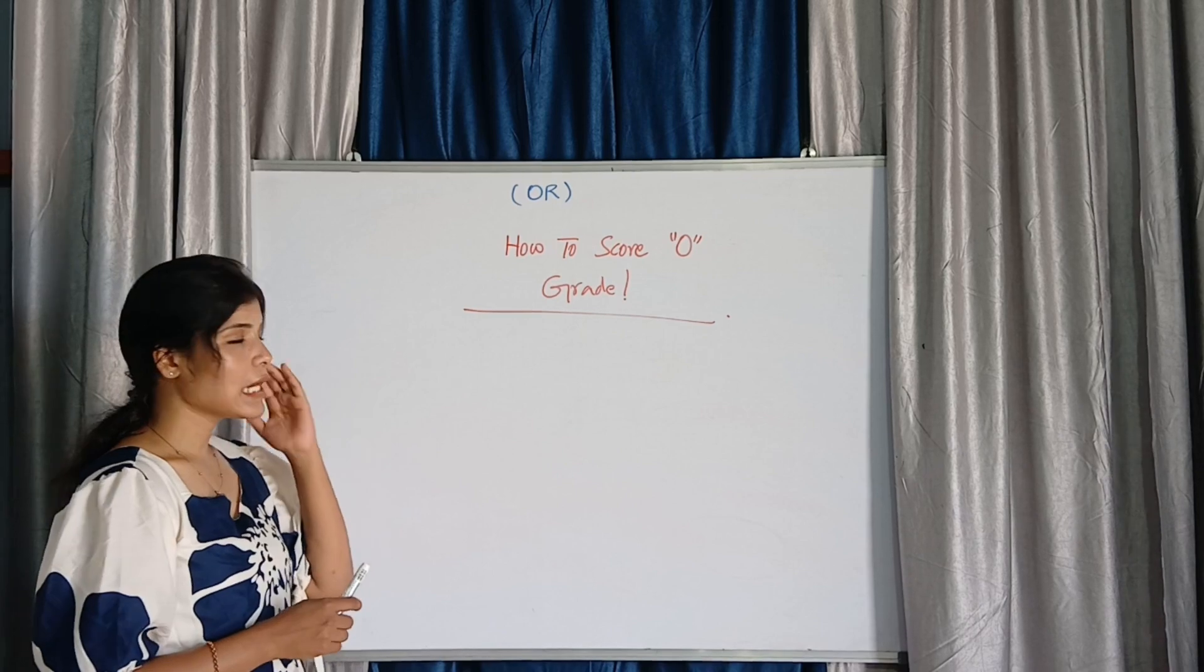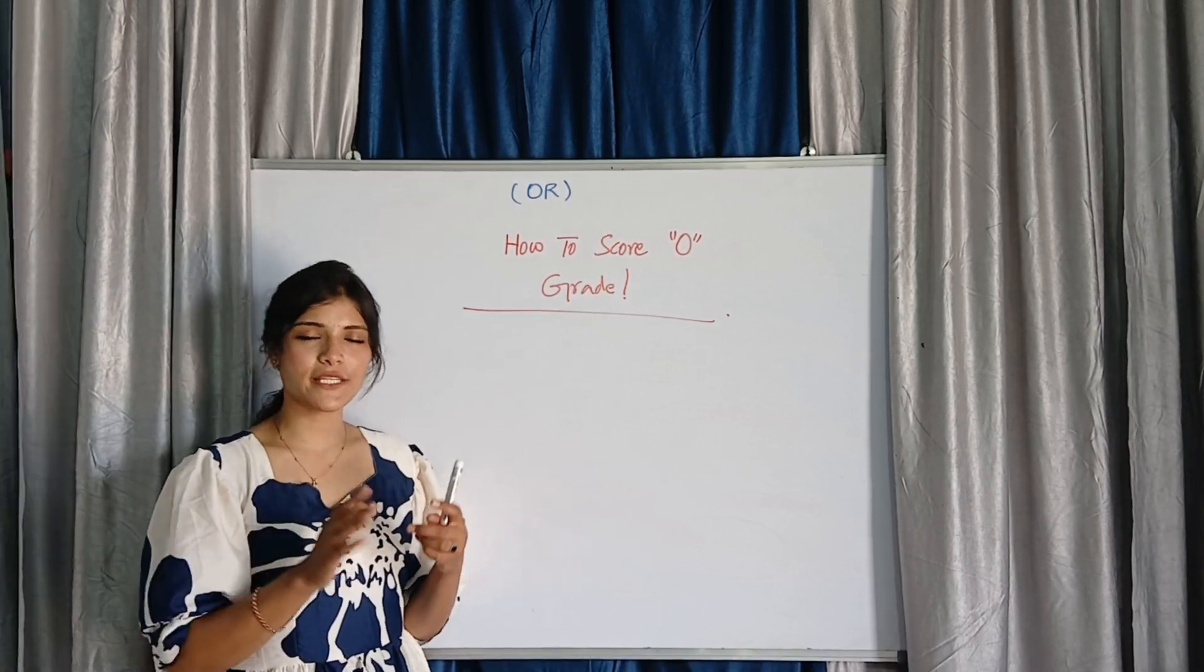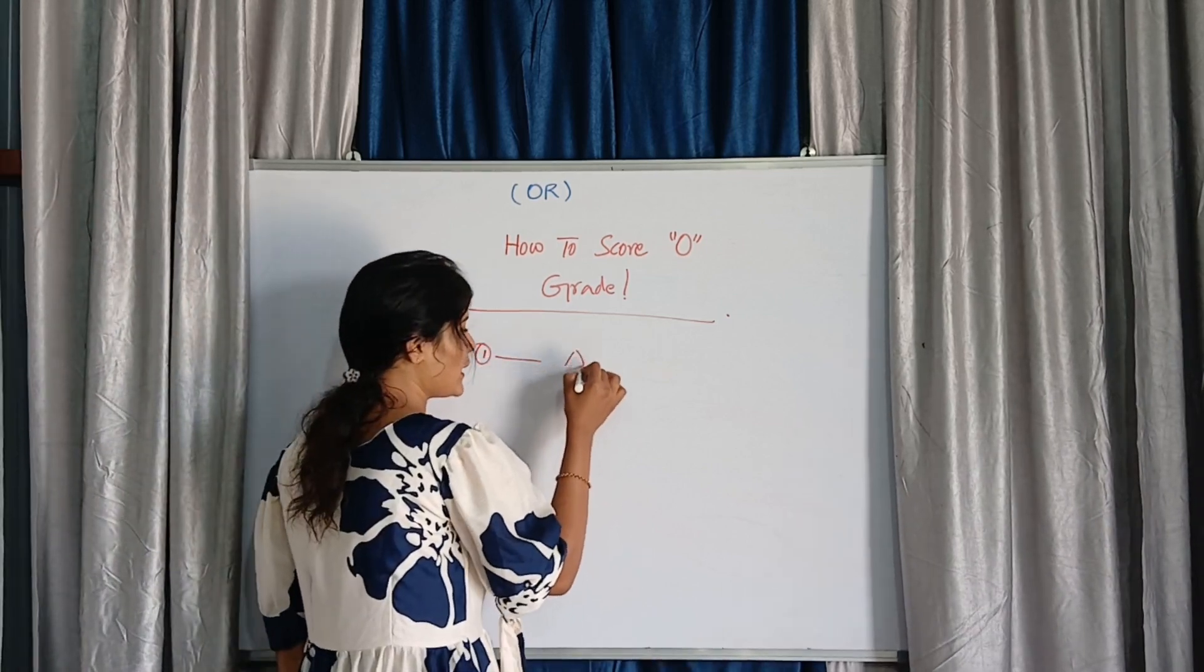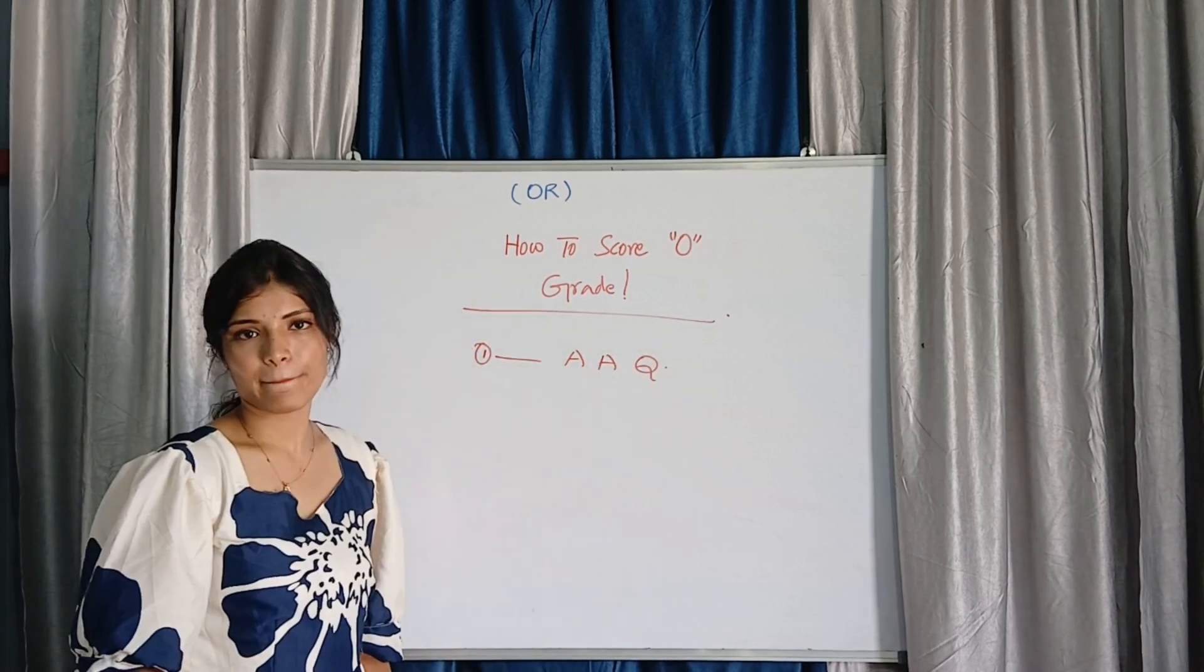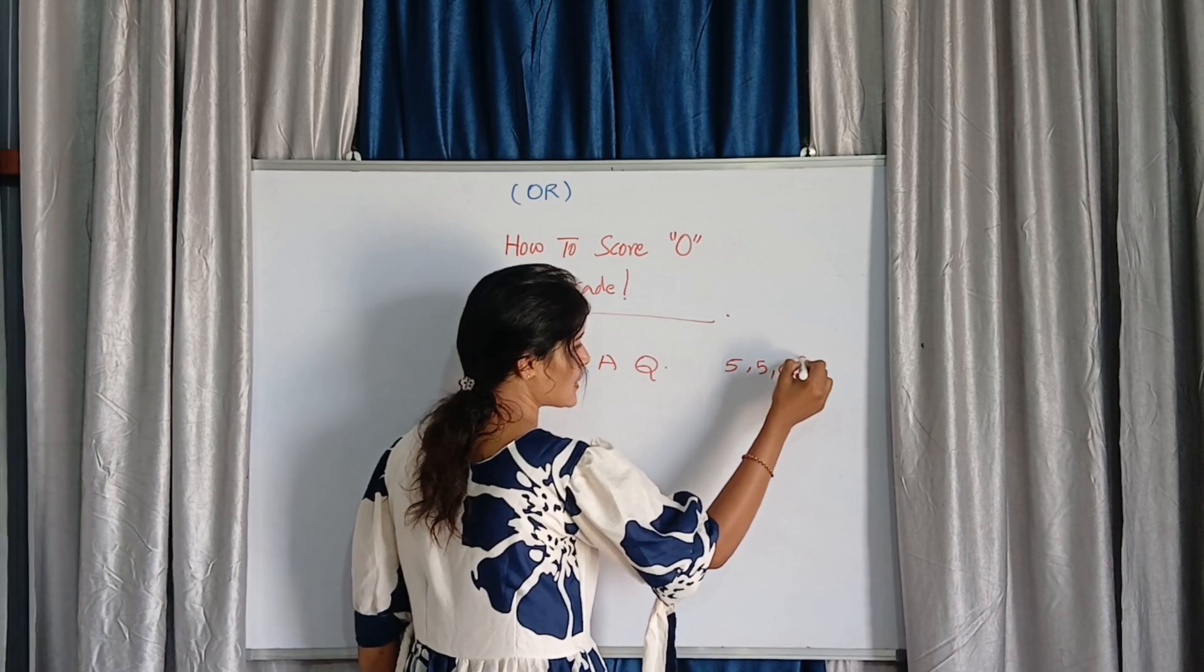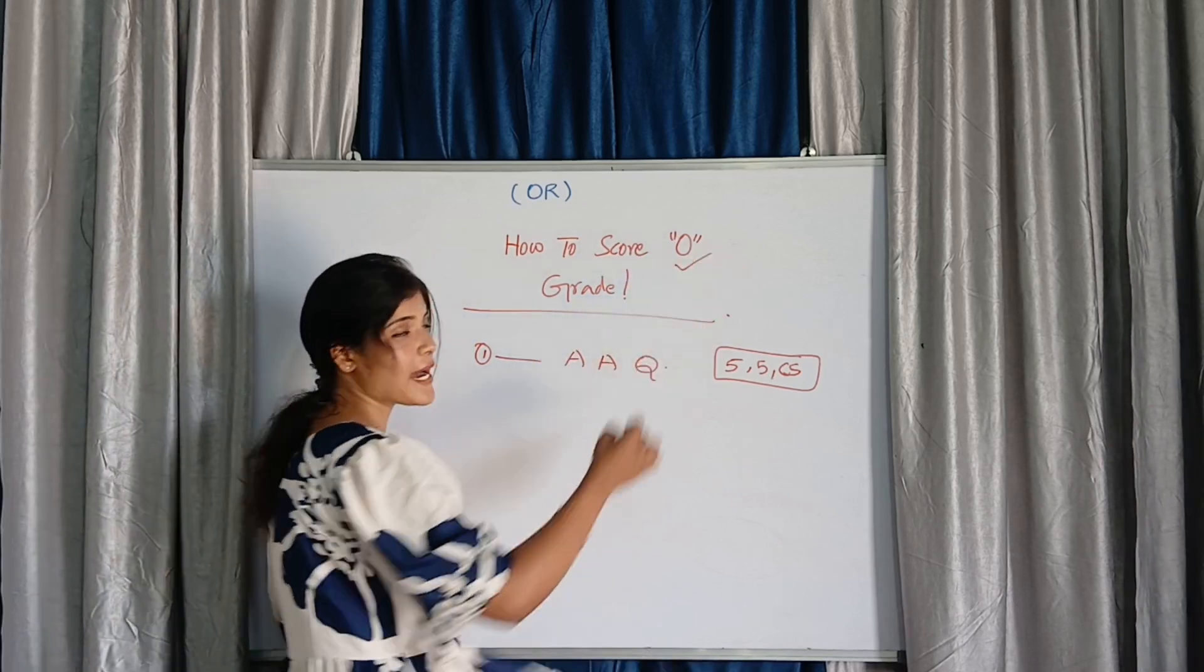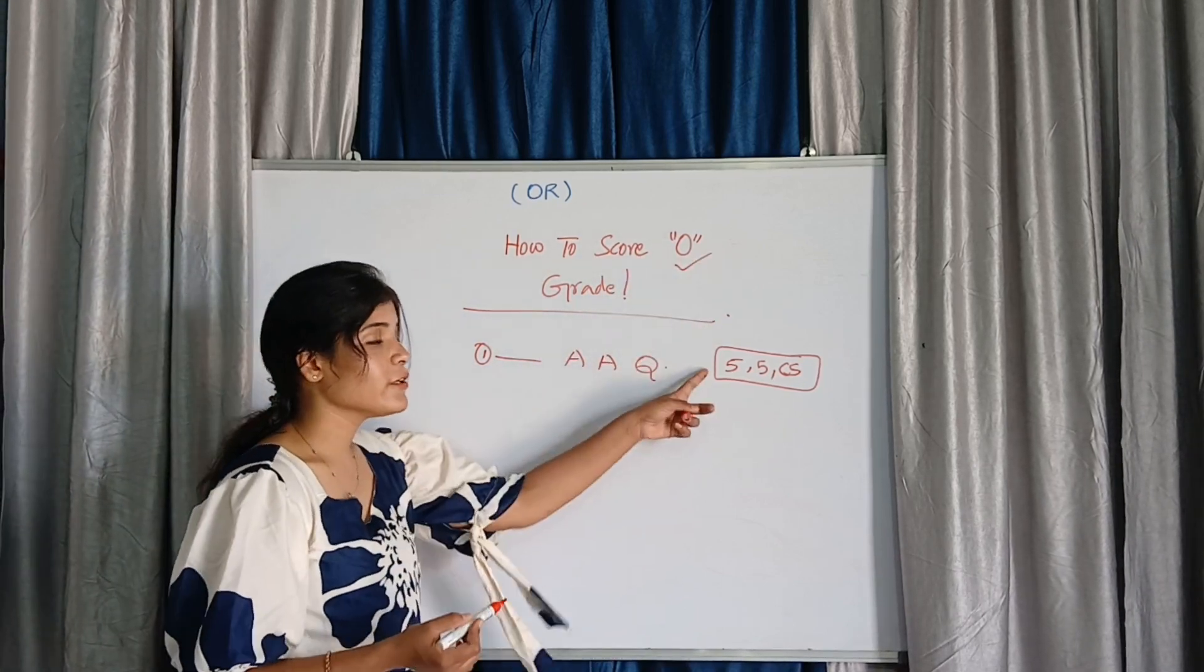So how to score O grade? After completing your 5 units preparation, theory, problems, everything, the first thing you need to remember is attempting all questions in the examination is important. Part A 5 questions, part B 5 questions and case study. These 3 things if you are attempting, only then expect O grade.